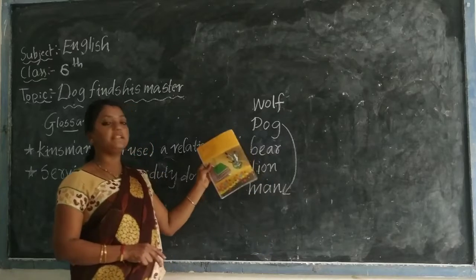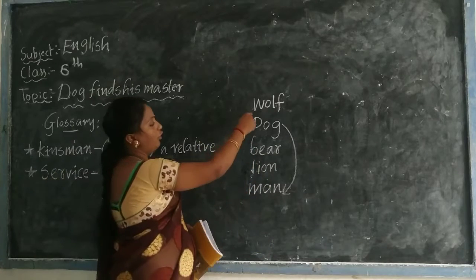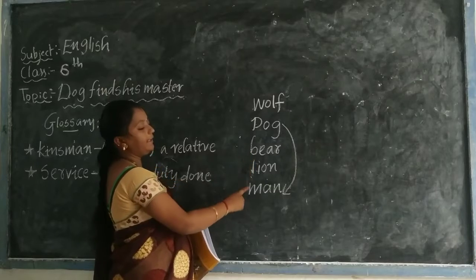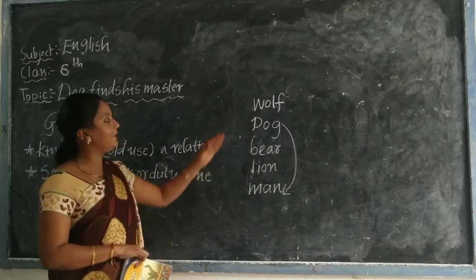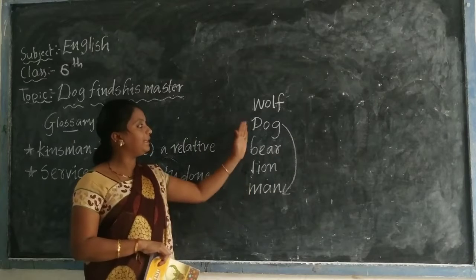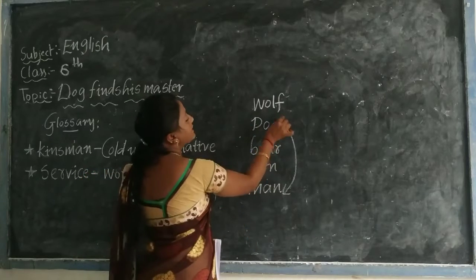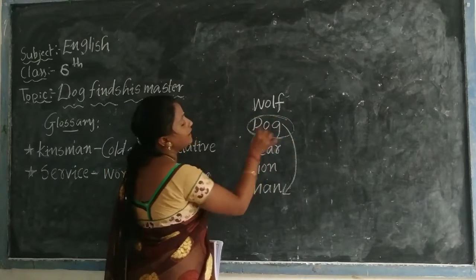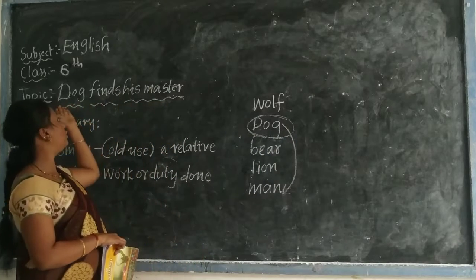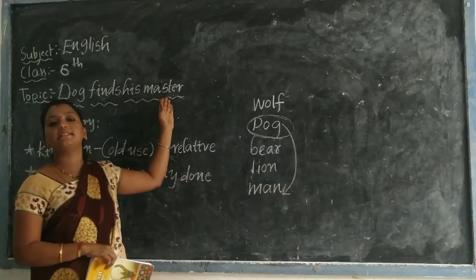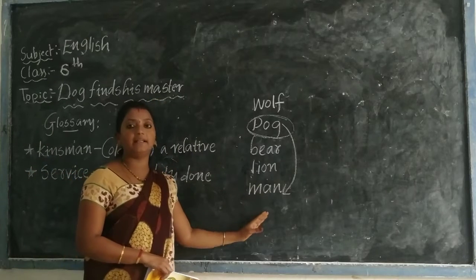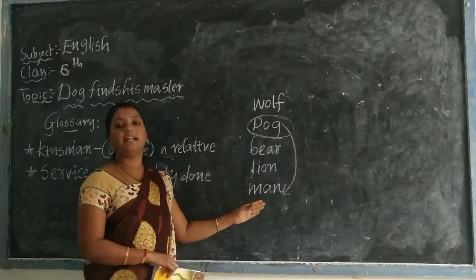Okay, in this story what happened? The wolf, dog, bear, lion, and the man — these are the characters in this story. But here the dog is the main character. He was searching for a good master. That is the title: 'Dog Finds His Master.' So finally who does he find? He finds a man.